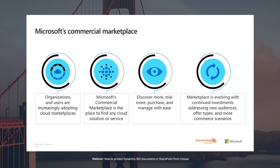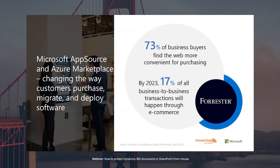Organizations today are increasingly adopting cloud marketplaces and buying a lot of software for the cloud. The Microsoft commercial marketplace is a single location to buy solutions and services — you can buy and try different solutions from providers to use within your company. As the cloud continues to evolve, there are many different offer types and scenarios that we continually keep improving. A Forrester quote states that 73% of business buyers find it more convenient for purchasing, and by 2023, 17% of all business-to-business transactions will happen through e-commerce.